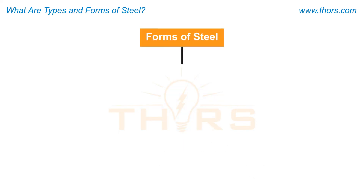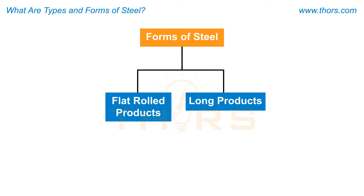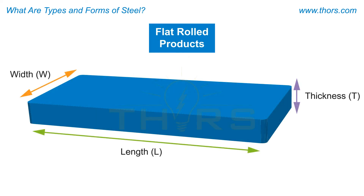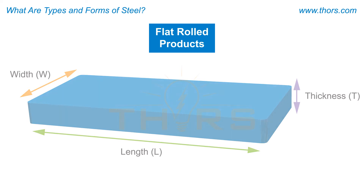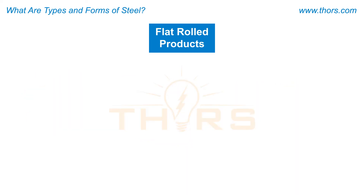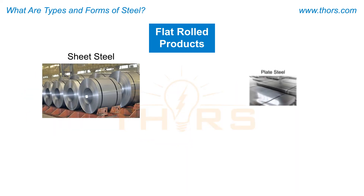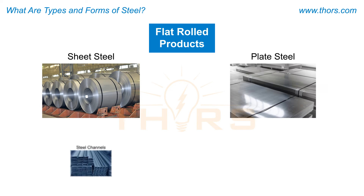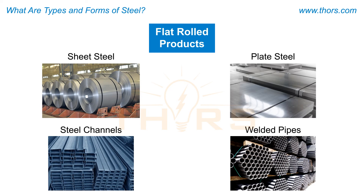In the broadest sense, there are two major forms of steel: flat rolled products and long products. Flat rolled products have a length that greatly exceeds their width and thickness. Primary types of flat rolled products include sheet steel, plate steel, steel channels, and welded pipes or tubing that originated from flat rolled sheets.